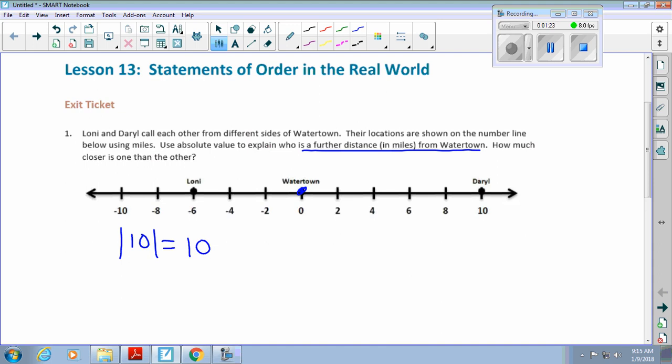So this is our friend Daryl. And here we have Lonnie, right? His distance is 6 to the left of zero. So the absolute value of negative 6 is six. The question is, who is a further distance from Watertown? Daryl is further away.